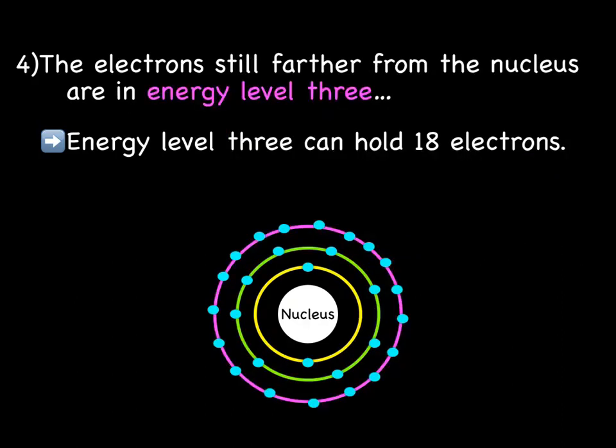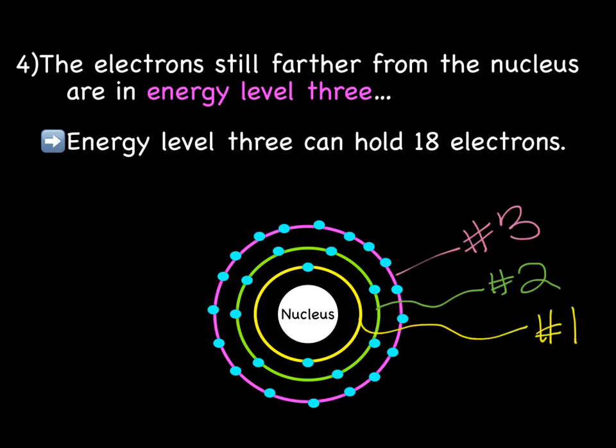The electrons still further from the nucleus are in energy level 3. The pink ring is energy level 3, the green is still energy level 2, and the yellow is energy level 1. What you should note here is that as the numbers get bigger, 1, 2, 3, the electrons, their orbits, their energy level, their shell, is farther and farther from the nucleus. Energy level 3 can hold up to 18 electrons.